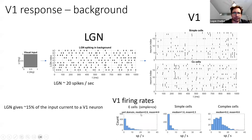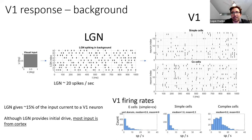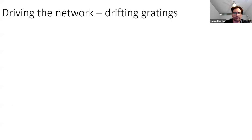An important observation: when you look at the input currents to V1 when they reach a steady state, LGN only accounts for approximately 15% or so of the input current to V1 cells — it varies from cell to cell, but about 15%. So although LGN provides the initial drive, most input is from cortex. But further, if you silence LGN, then cortex itself is going to go silent.